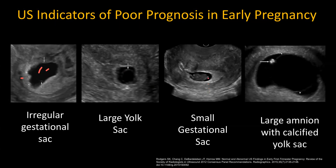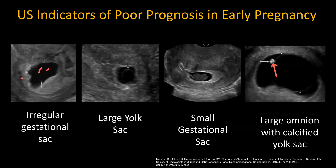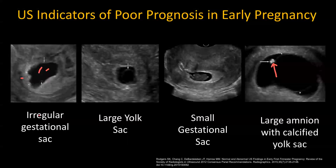Another sign is a small gestational sac — the fetus looks cramped in the space. Another sign is a large amnion with a calcified yolk sac: a fairly large amnion with no visible fetal pole. Other findings include bradycardia — a sustained fetal heart rate below 90 beats per minute — which is a poor prognostic sign.